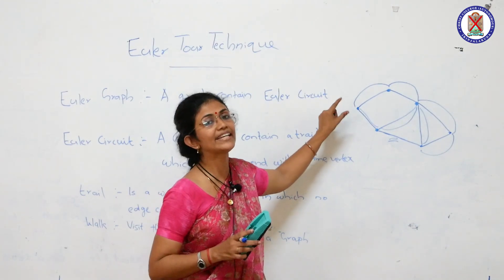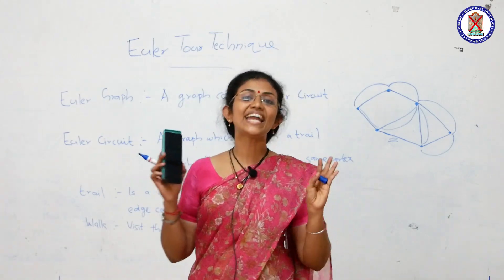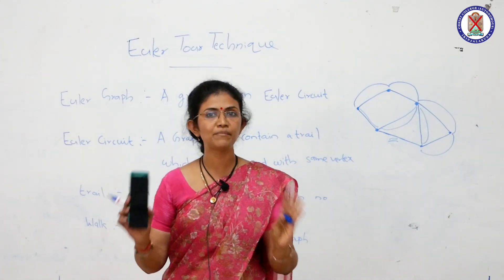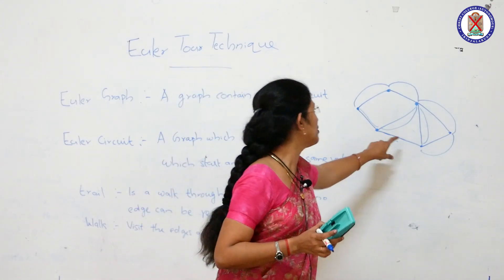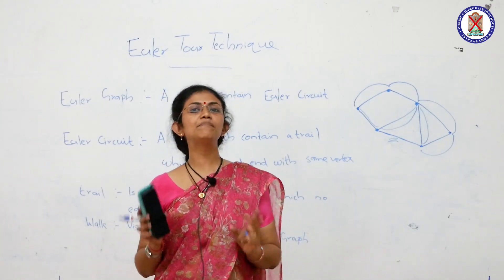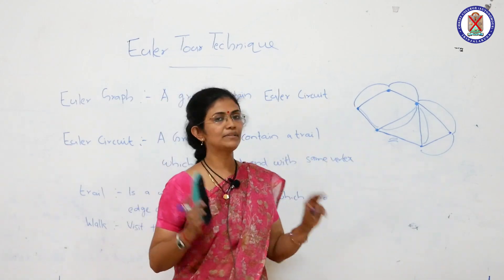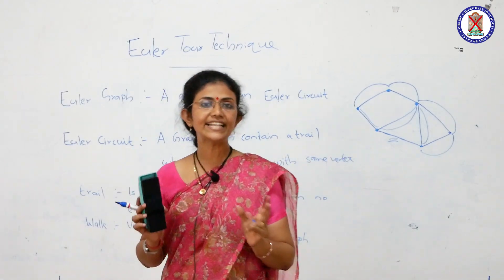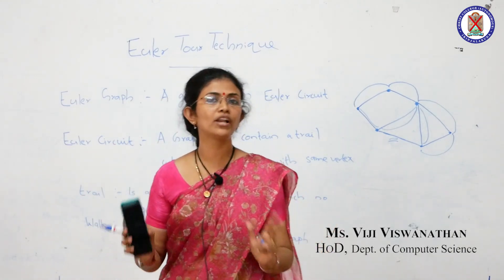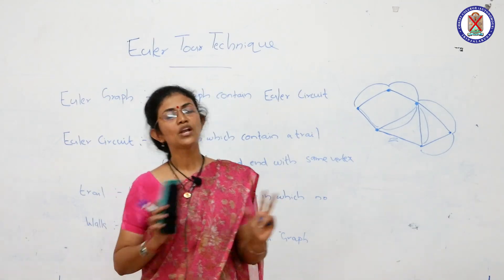What degree does each vertex have? It has an even degree. Now, if we have a graph where every vertex has even degree, we can say that it is an Euler graph. If we look at the degree of vertices in this graph, it is part of the Euler graph. A graph with all even-degree vertices gives us a holograph — an Euler graph.